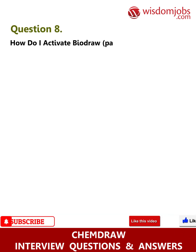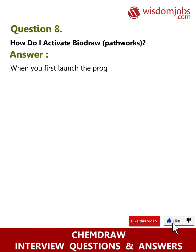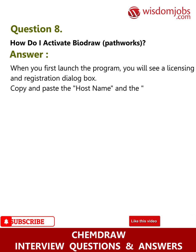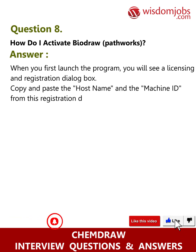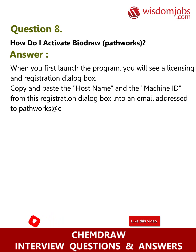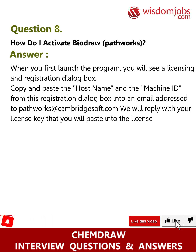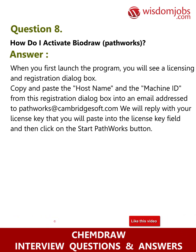Question 8: How do I activate DrawPathWorks? Answer: When you first launch the program, you will see a Licensing and Registration dialogue box. Copy and paste the hostname and the machine ID from this registration dialogue box into an email to pathworks@cambridgesoft.com. We will reply with your license key, which you paste into the License Key field, and then click the Start PathWorks button.